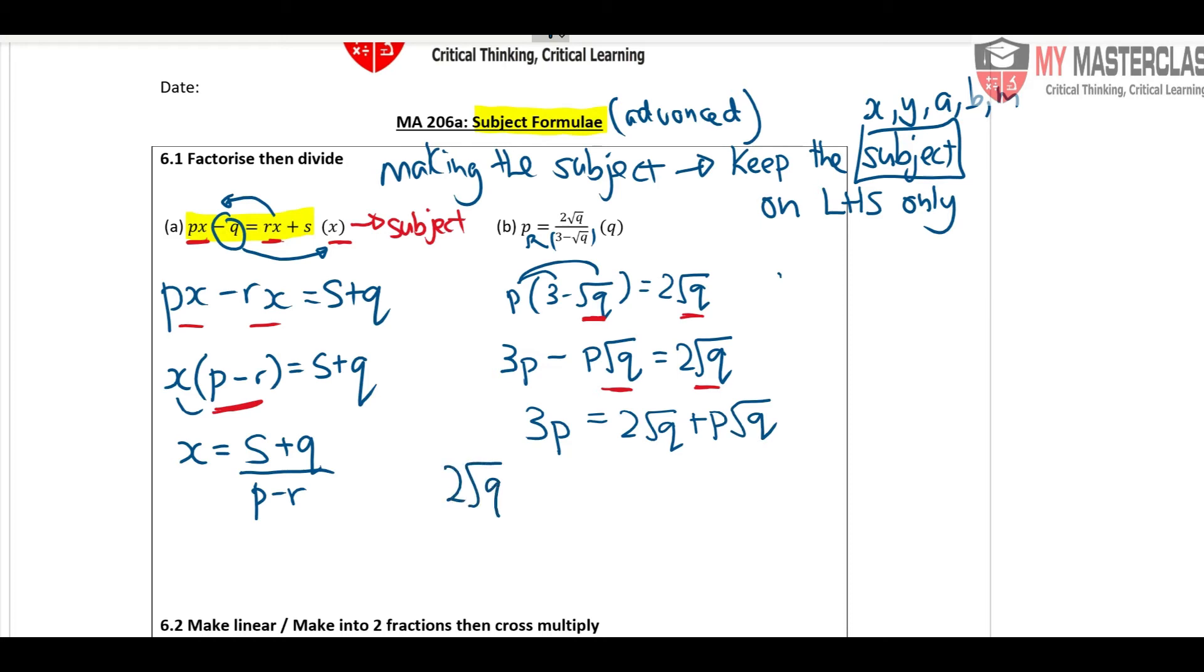Then let's try the mirror image, which means 2 square root Q plus P square root Q equals 3P. This square root Q and this square root Q, are they exactly the same thing? Yes they are, so you can factorize it out. So you see the technique is once you got the same thing inside, you just factorize it out.